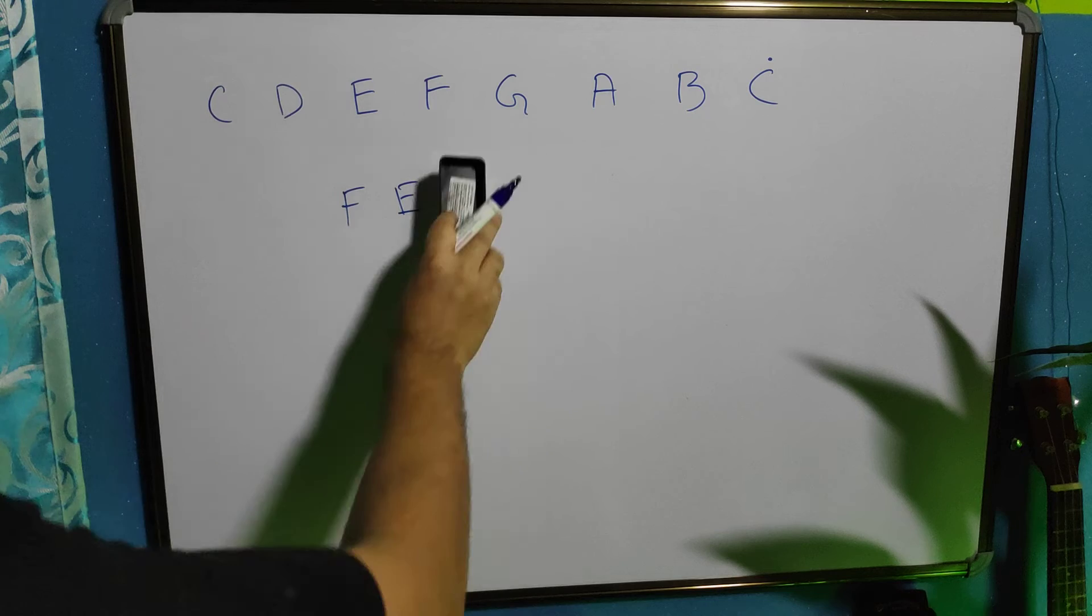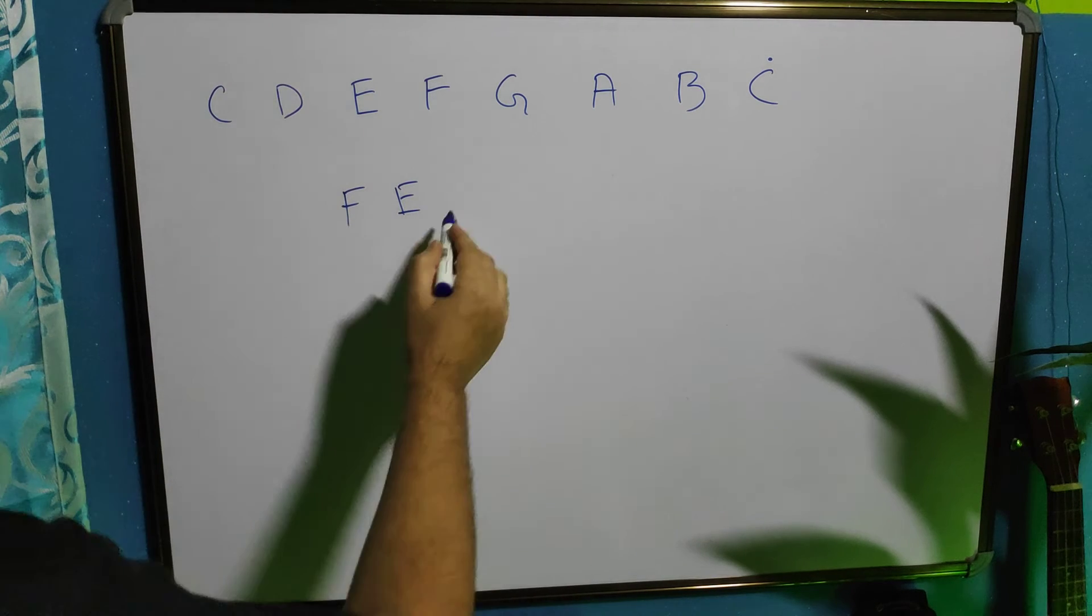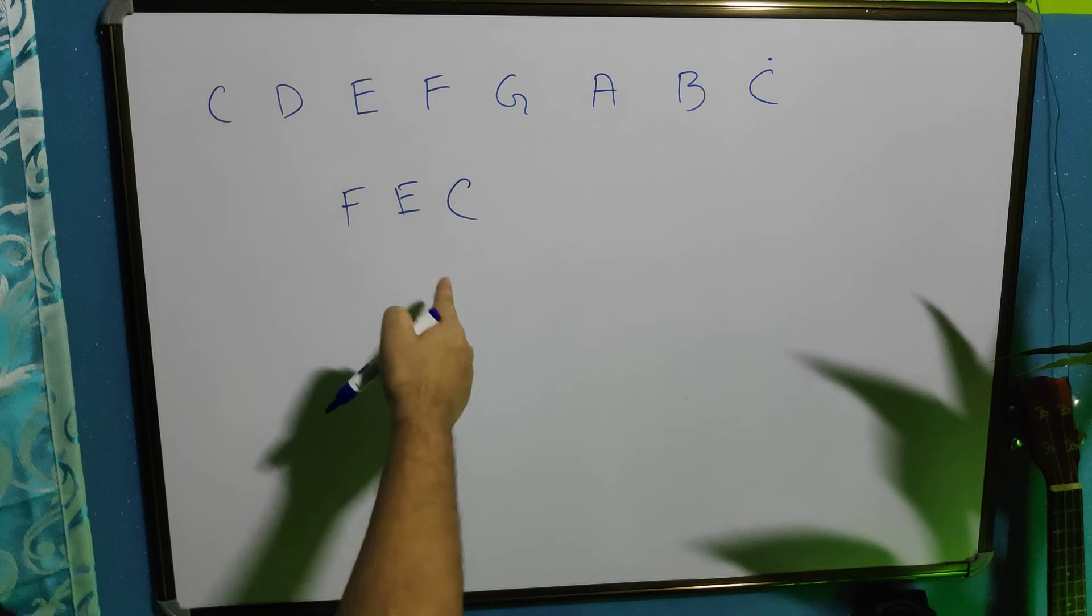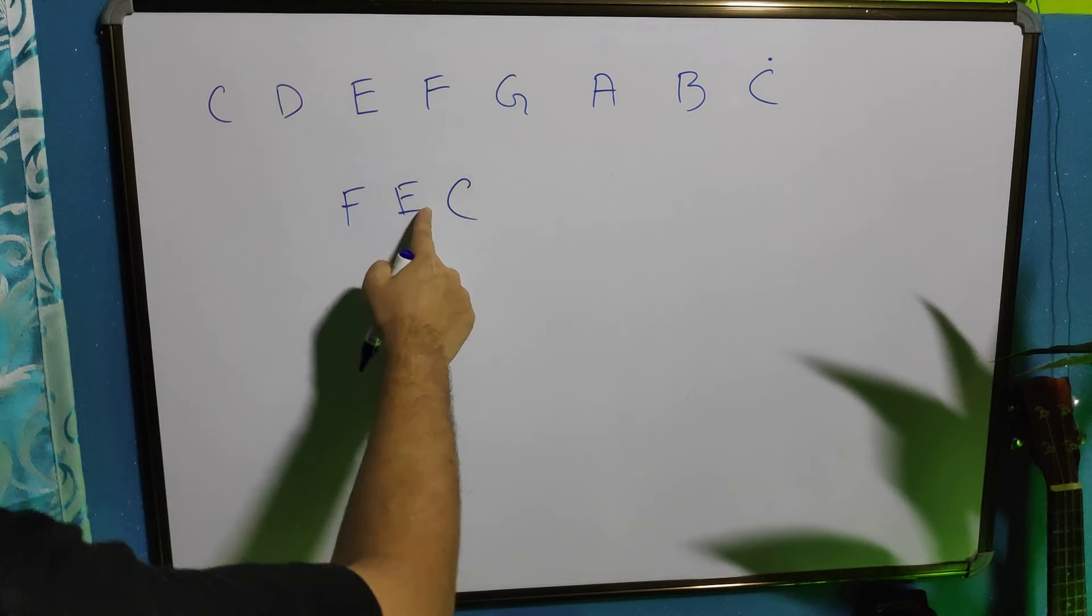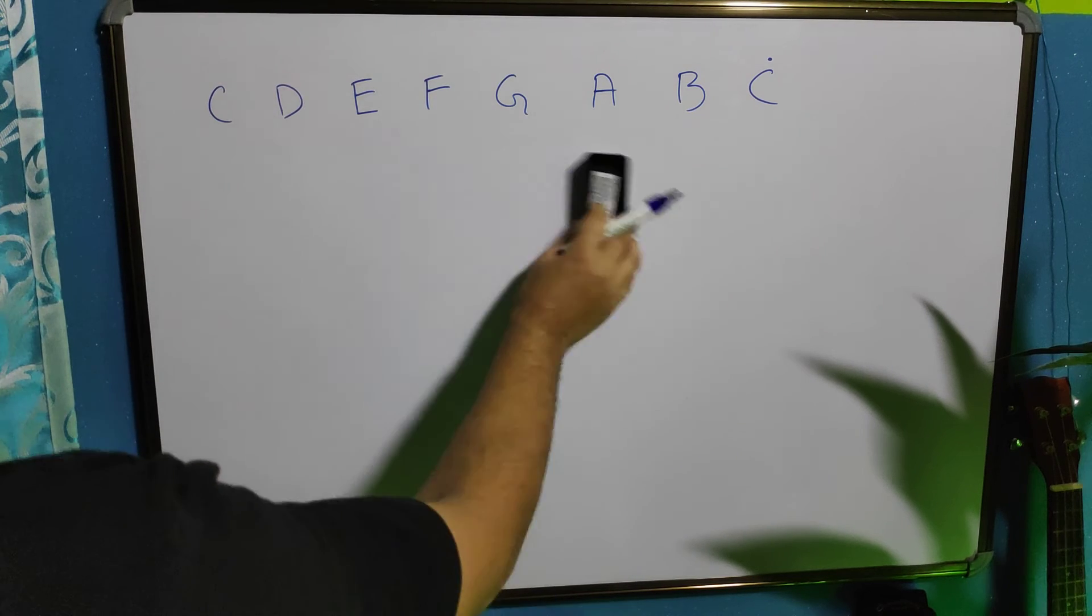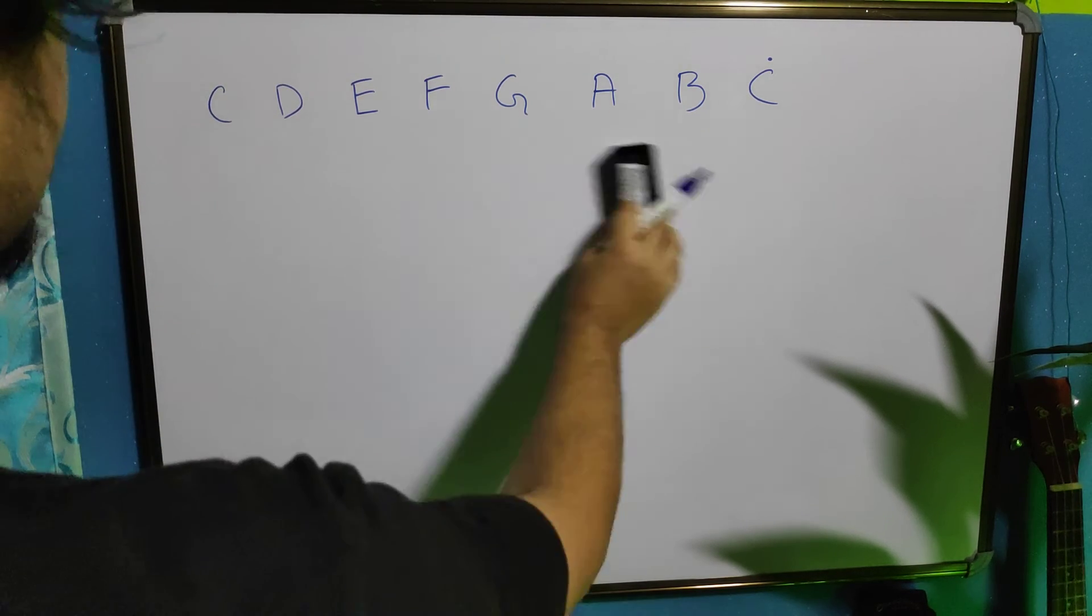But if we play F, E, C, then it is descending but it is not consecutive because F, E, D is missing here. OK? These are just the terms for explaining. I will explain you in a better way.